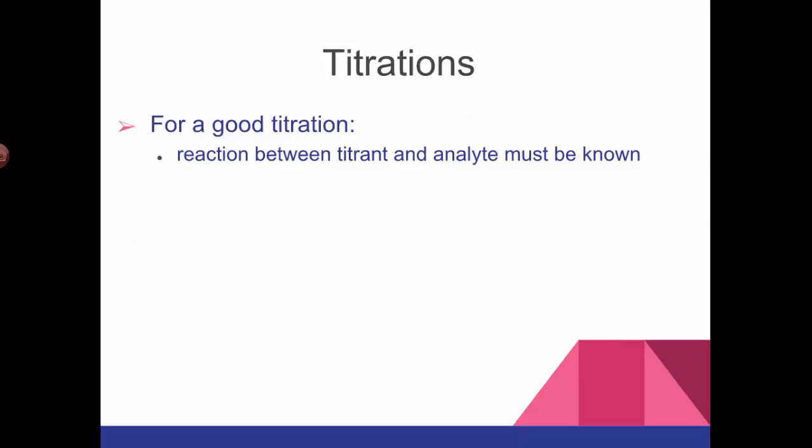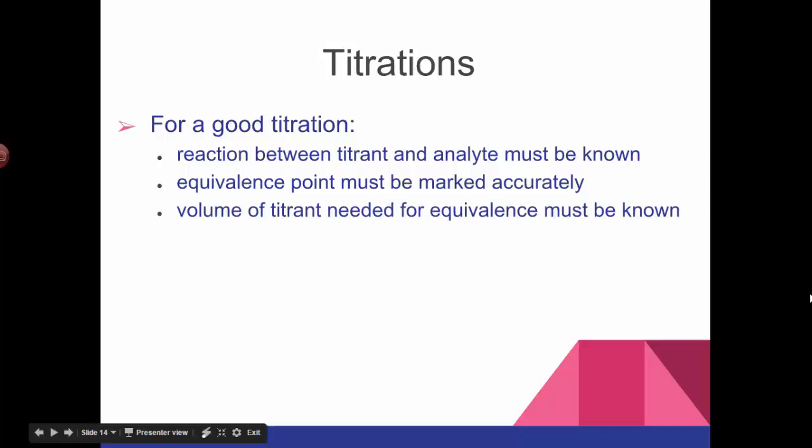For a good titration, the reaction between the titrant and the analyte - you have to know what reaction happens between them, so you have to be able to write a balanced equation. You have to figure out where the equivalence point is going to be and it has to be marked accurately. Then you have to know how much volume of titrant you've actually added - that has to be known quite specifically. To do that we use a specific piece of glassware called a burette.